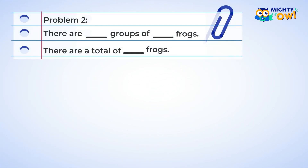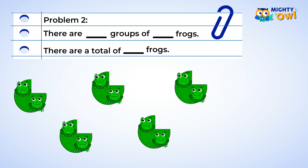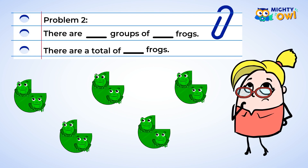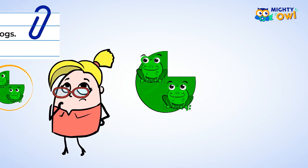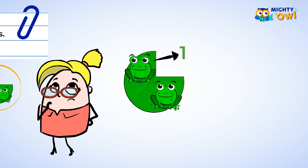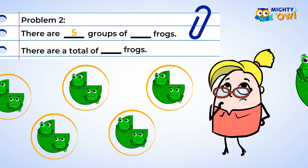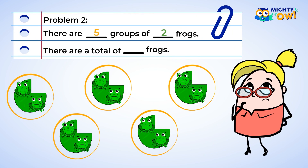Here is another example of multiplication as groups. This time you are being asked how many groups there are and how many frogs are in each group. The problem also wants the total number of frogs. You can circle each group of frogs. You made five circles, so there are five groups. The number five goes in the first blank. Next, count the number of frogs in each group. There are two frogs in each group. The number two goes in the next blank.